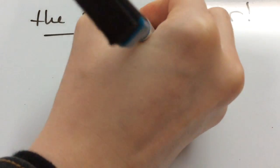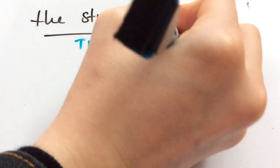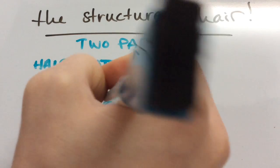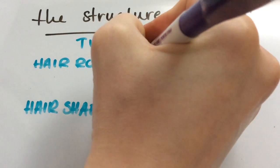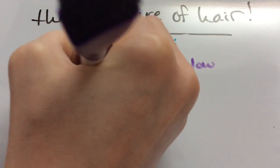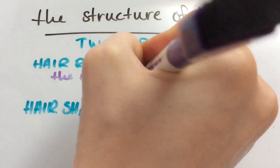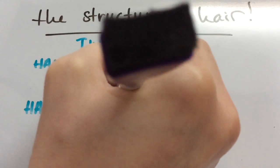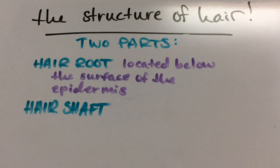Hair is made up of two parts: the hair root and the hair shaft. The hair root is located below the surface of the epidermis, so you can't see it with your eyes. You'd have to slice the skin and look underneath.